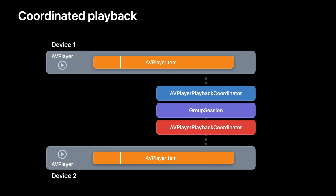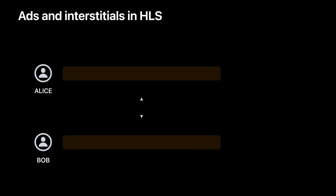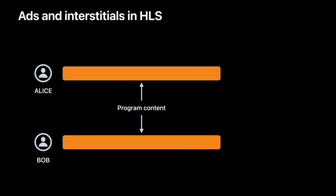Let's see how coordinated playback works in SharePlay. While participants are on a FaceTime call, the playback control commands originating on one participant's device are shared across the group so that they all play in sync. While this works well if all the participants are watching the same content, what would happen if some of them have ads?